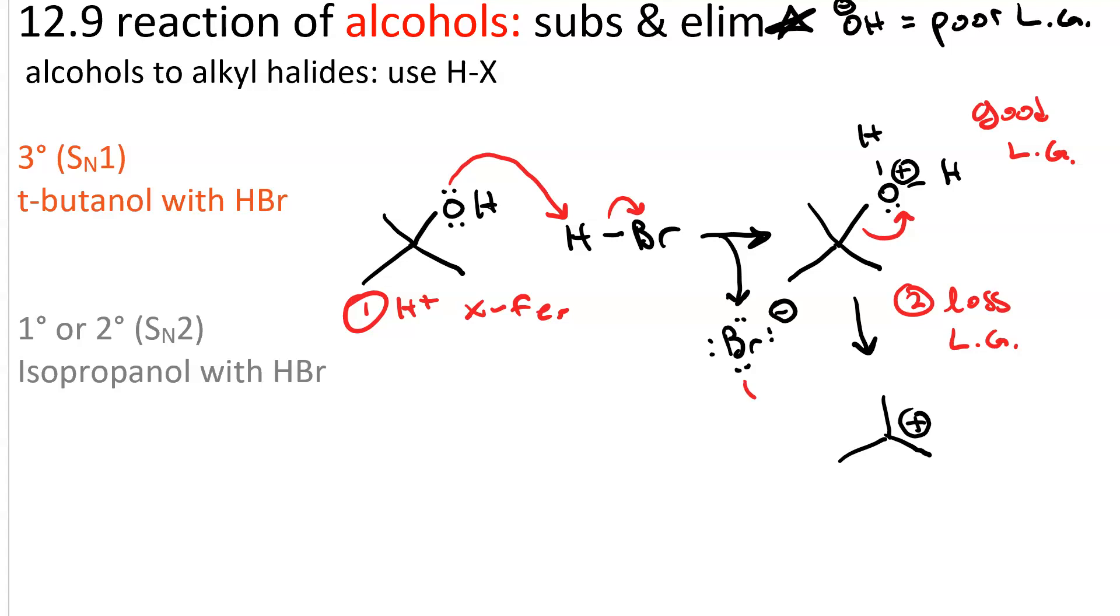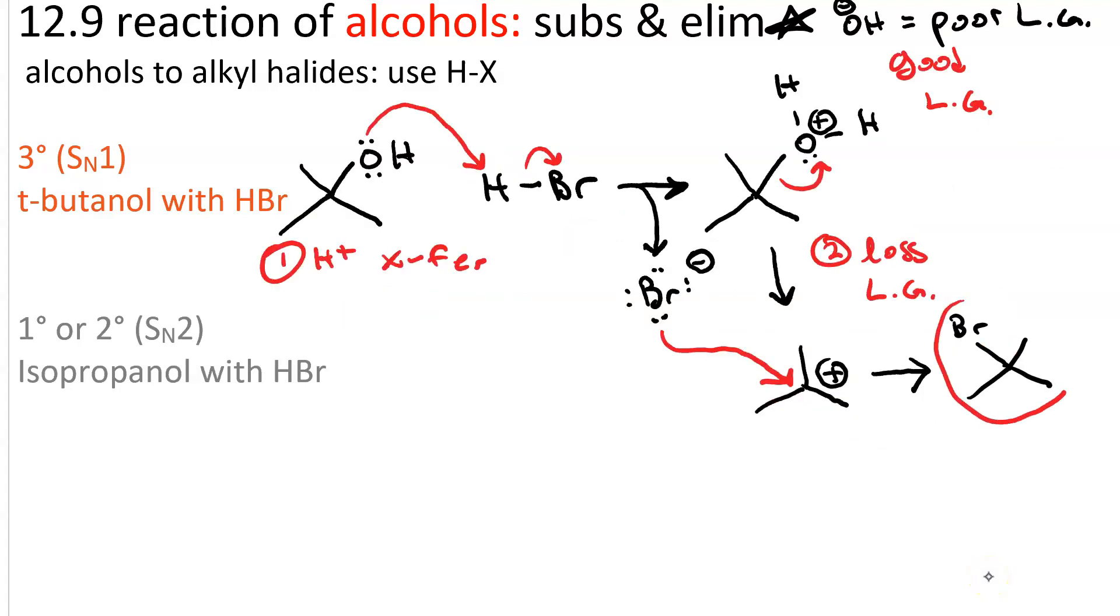And in our third step, we have nucleophilic attack at that position by the bromide ion that was generated during proton transfer of the hydrobromic acid. And so here is our final product, 2-bromo-2-methylpropane, a tertiary alkyl bromide. What we've effectively done is we've replaced the hydroxyl group with the bromide. And we, of course, had to have the extra step, the proton transfer, to make our hydroxyl into a good leaving group.